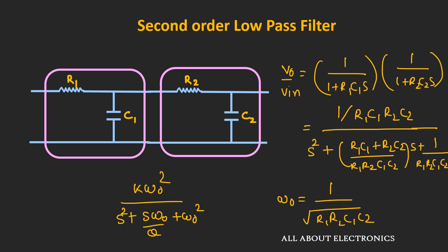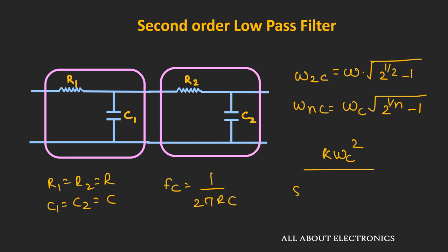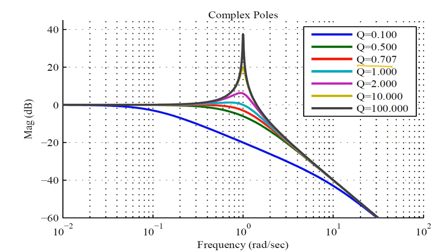When R1=R2=R and C1=C2=C, the transfer function becomes K·ωc² / (s² + (2/RC)·s + ωc²), and the quality factor Q is at most 0.5. The value of Q represents the amount of peaking around the corner frequency fc — as Q increases you see more peaking, and as Q decreases you see higher attenuation at the cutoff frequency. The filter design is called a Butterworth filter design when Q equals 0.707, because at that cutoff frequency the amplitude equals 1/√2 times the maximum value.